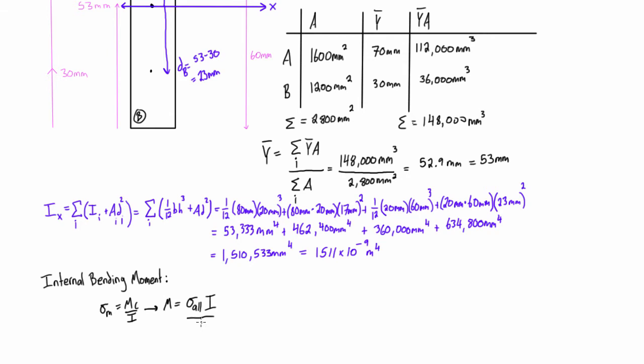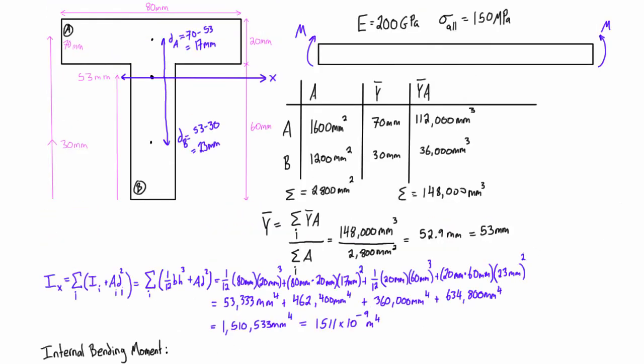We do need to calculate c. Basically we're looking for the furthest distance, so it's either that distance or that distance. It turns out that c up top here is equal to 80 minus 53, so that's 27 millimeters. C down here on the tensile side, where that one is the compressive side in this loading condition, is just equal to 53 millimeters. So it looks like the value we're using here is 53 millimeters.